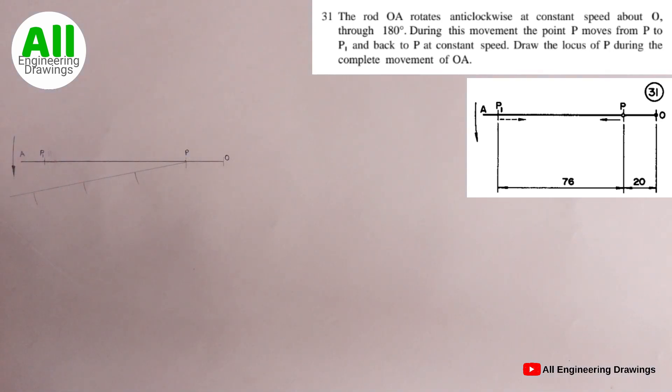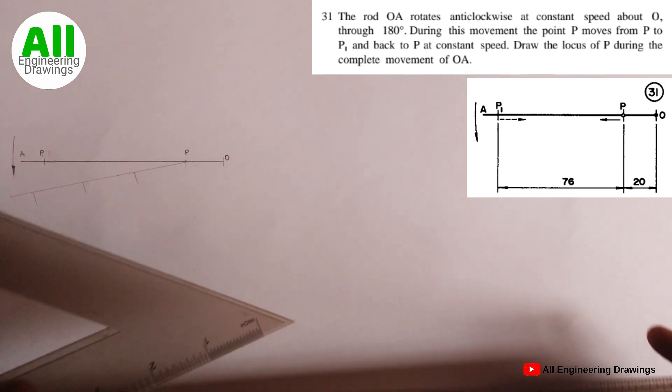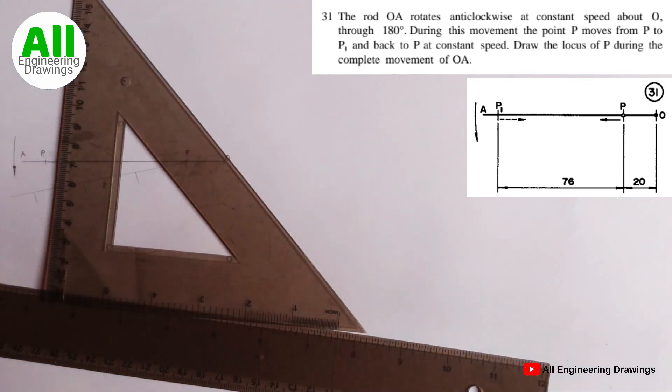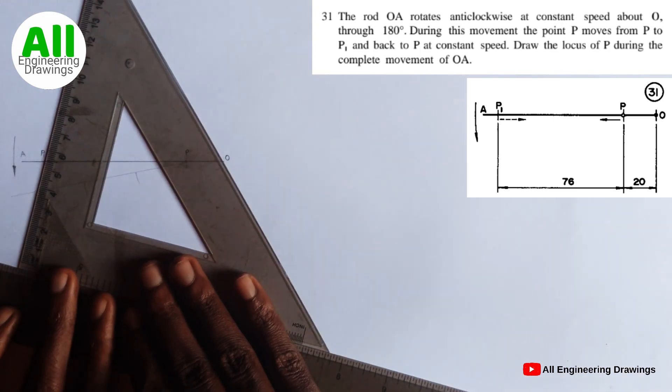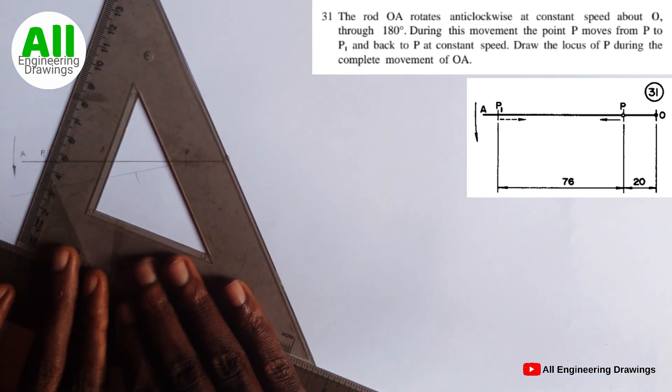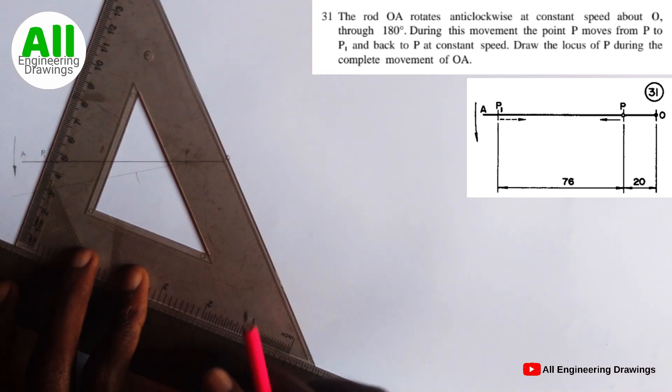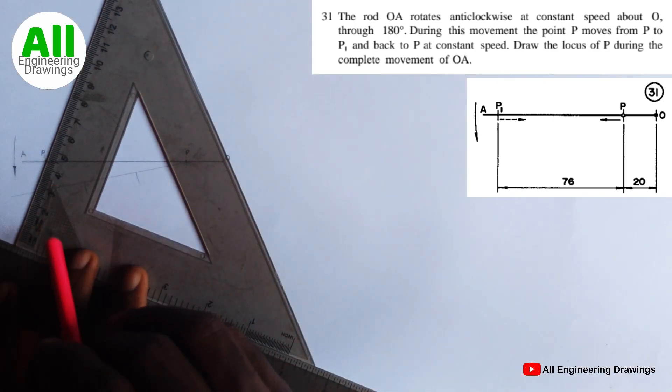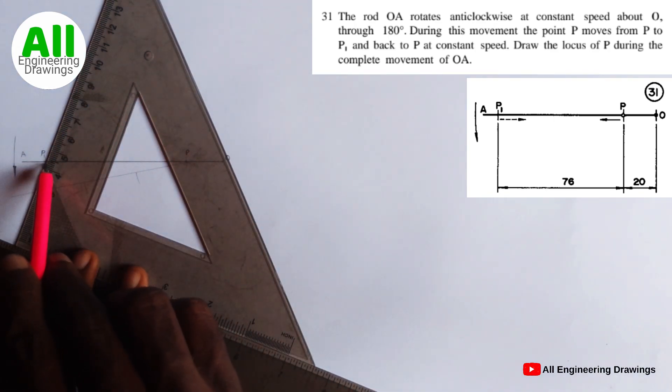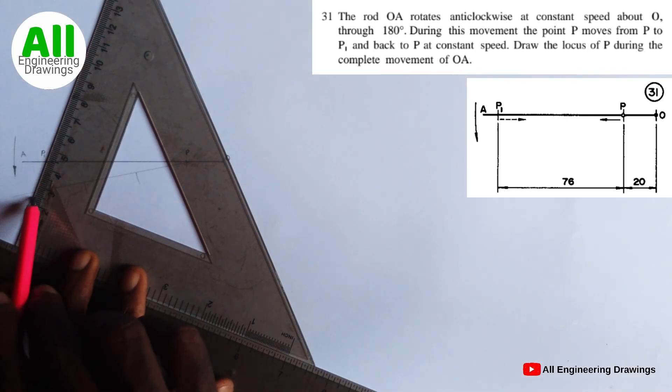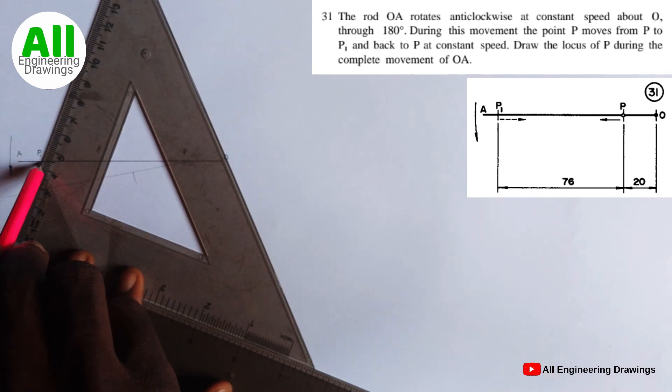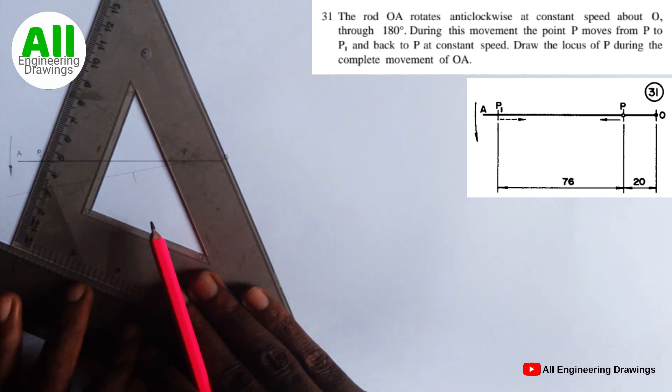After marking the points, next is to place your ruler and your set square this way. Your ruler and your set square should be placed in such a way that this side of your set square passes through your point P1 and the last point you marked on your inclined line. Then you can now draw a line.